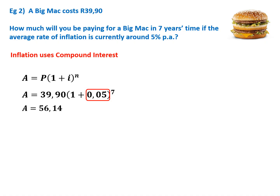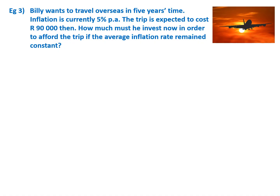Remember that 5% we're going to enter as 0.05. Billy wants to travel overseas in five years time. Inflation is currently 5% per annum and the trip is expected to cost R90,000 then. So how much must he put in now — what is his initial deposit — in order to afford the trip if the average inflation rate remains constant? If the average rate of inflation remains at 5%, how much does he need to put in the bank now to get out R90,000 in the future?